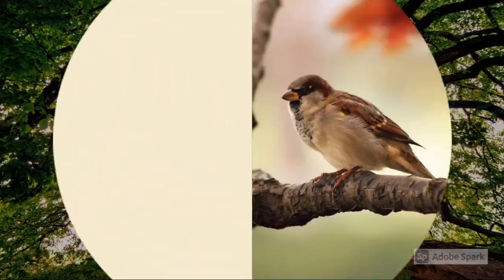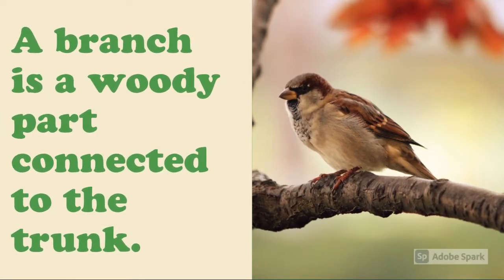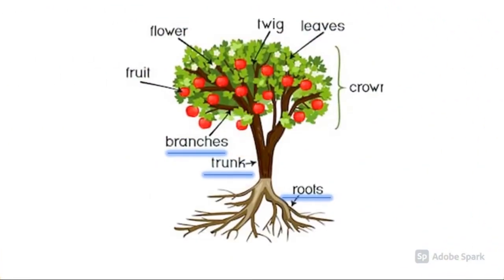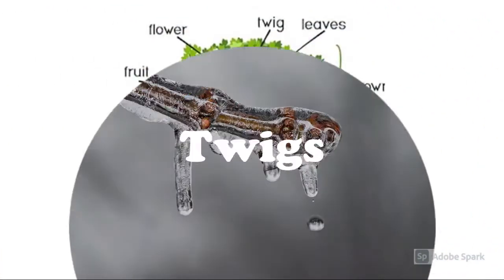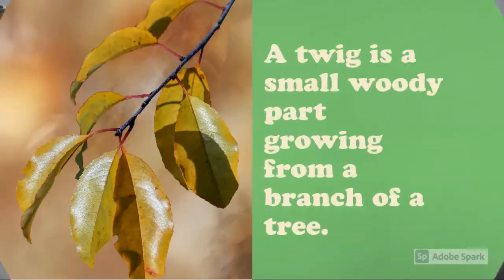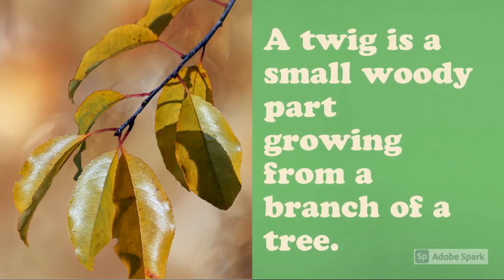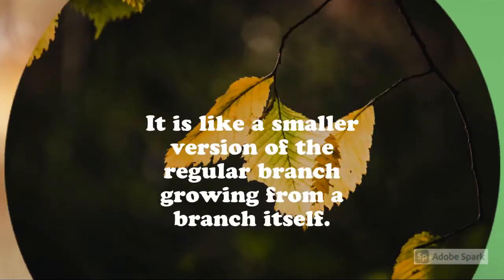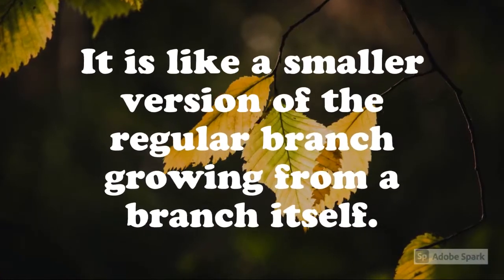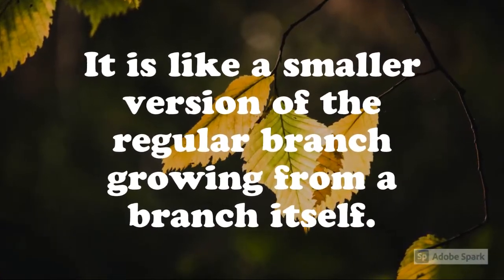Branches: a branch is a woody part connected to the trunk. Twigs: a twig is a small woody part growing from a branch of a tree. It is like a smaller version of a regular branch, growing from a branch itself.